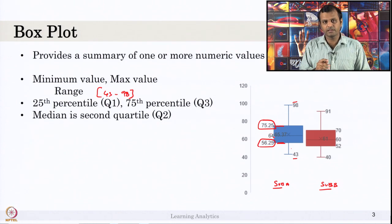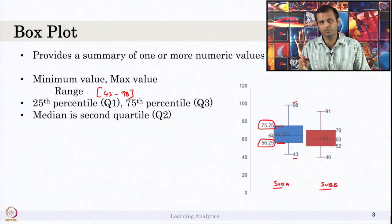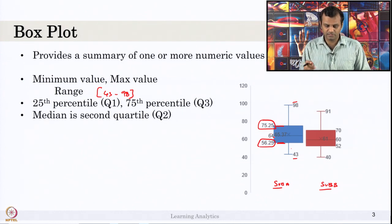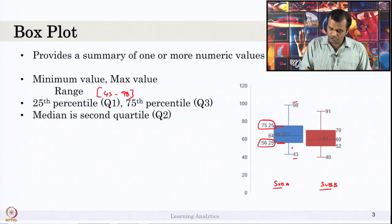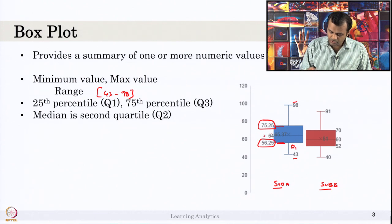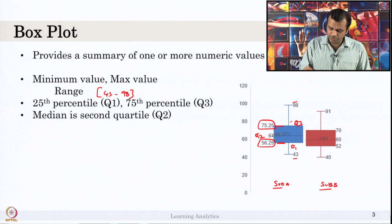When we say we want to see the median score and select the students above the median score, that means you are selecting 50 percent of students in your class. The median is Q2. Below the 25th percentile is Q1, between 25th and 50th is Q2, between 50th and 75th is Q3, and above 75th is Q4.